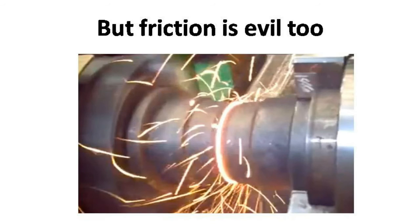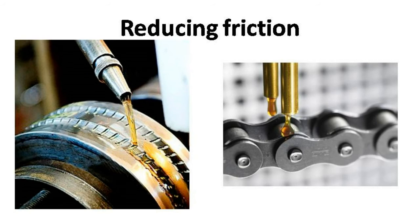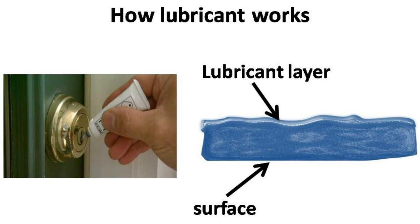Friction often produces unwanted heat and causes machine parts to decay. People apply oil, grease, etc. between moving parts to decrease friction. These substances form a very thin layer, and moving parts don't rub against each other directly — we call them lubricants. We often use oil as a lubricant in hinges, door locks, etc., to reduce friction between moving parts so they turn and swing smoothly.